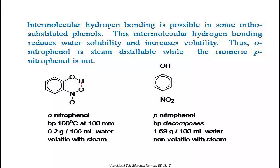Intramolecular hydrogen bonding is possible in some ortho-substituted phenols. This intramolecular hydrogen bonding reduces water solubility and increases the volatility of the compound. Thus ortho-nitrophenol is steam distillable, while its isomer para-nitrophenol is not.